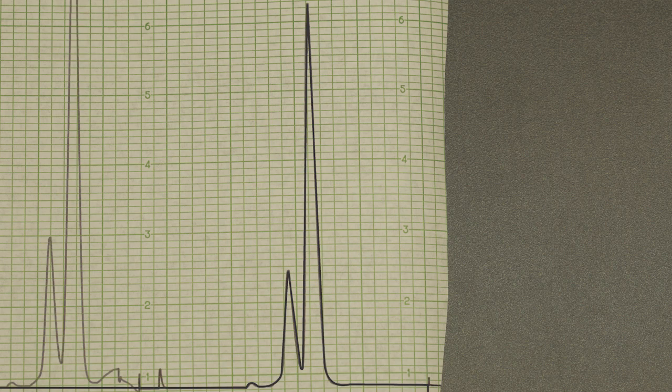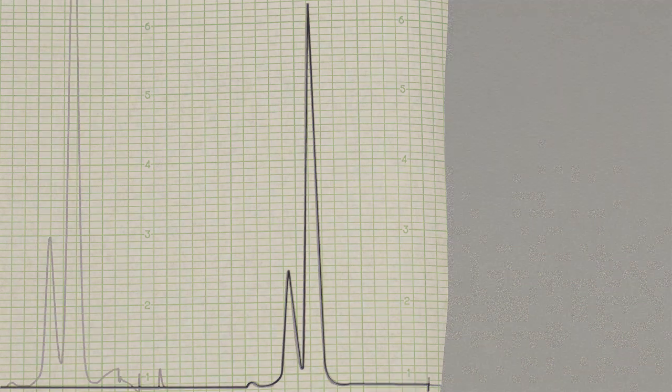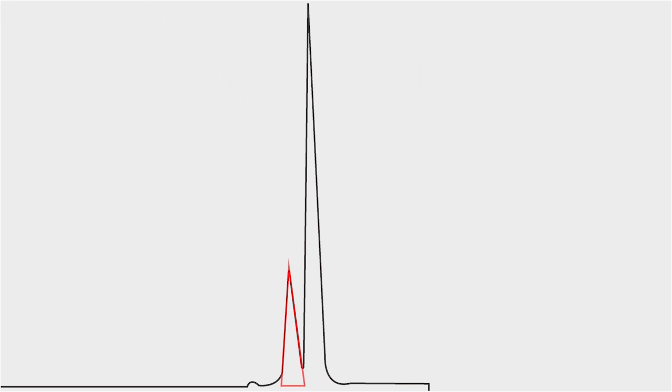To do this calculation, we assume that each peak in a chromatogram is a triangle. Although the peaks might not be perfect triangles, this is a close enough approximation.